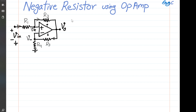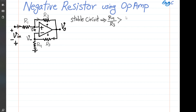For a stable circuit that remains in the linear region, we require negative feedback more powerful than positive feedback. This means R4 over R3 should be greater than R1 over R2. That is a very important requirement in this circuit, which we refer to as Equation 1.